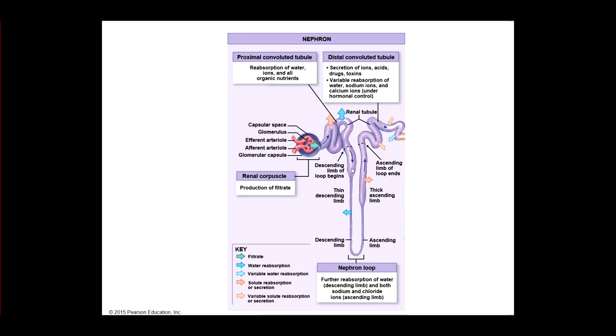Then from here, we're going to go through the nephron loop. And again, we're going to get more reabsorption of water, more reabsorption of things that we want to keep in the bloodstream, things that we don't want to go into the urine. And then over here, reabsorption is probably done at this point for the most part. This would be secretion.